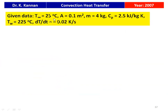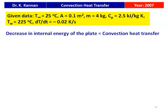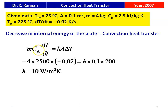Given: T∞ = 20°C, area = 0.1 m², mass = 4 kg, Cp = 2500 J/kg·K, T_wall = 225°C, dT/dt = −0.02 K/s. The plate loses heat energy: decrease in internal energy equals convection heat transfer. So −mCp(dT/dt) = hA·ΔT. Substituting: −4 × 2500 × (−0.02) = h × 0.1 × (225 − 20). Solving gives h = 10 W/m²·K.